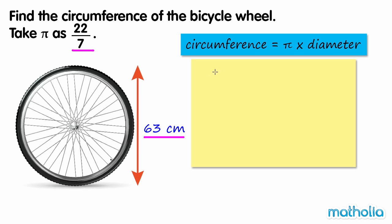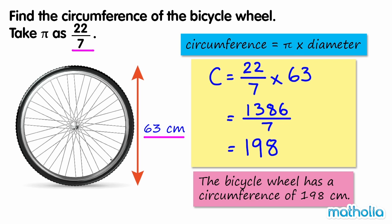Taking pi as 22 over 7, we can write that the circumference of the wheel is equal to 22 over 7 times 63. 1386 divided by 7 equals 198. Our unit of length is cm, so the bicycle wheel has a circumference of 198 cm.